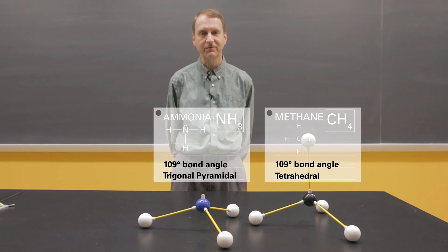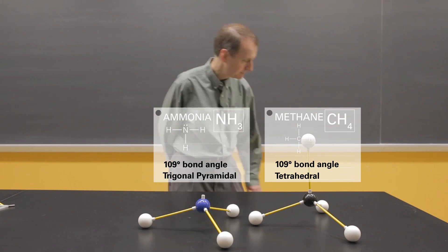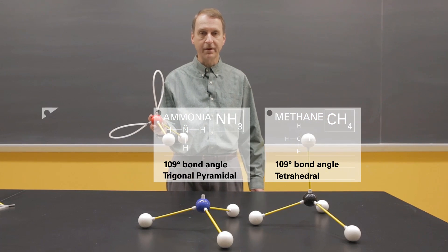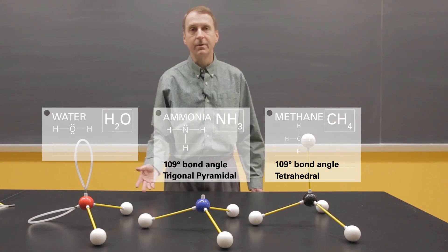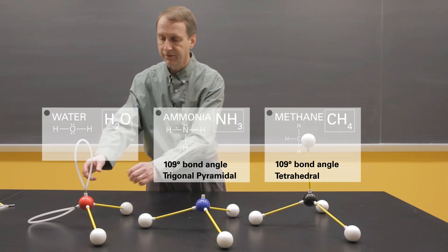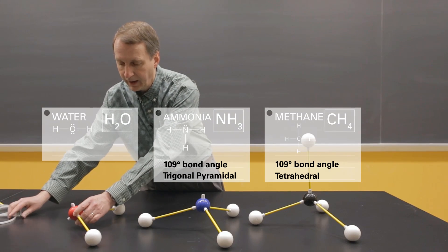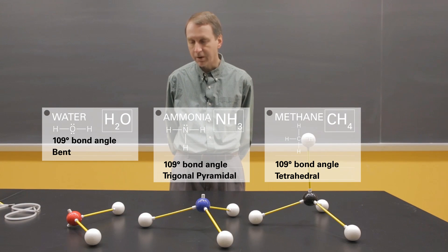Another molecule with four electron groups around a central atom is water. The Lewis structure of water shows two oxygen-hydrogen single bonds and two lone pairs. Here is the model of water. But if I want a word or phrase to describe the shape, I want to know where the atoms are, so I'll remove the lone pairs. Looking at that model, the word I want to use to describe the shape of water is bent.